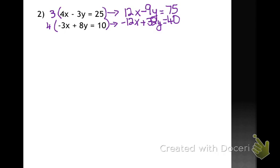Now, as you can see, I have created an opposite, 12x and negative 12x, which is exactly what I wanted. And now I have a system I know how to solve by adding them together. My x terms are eliminated. I get 23y equals 115. And when I solve for y, I get that y equals 5.